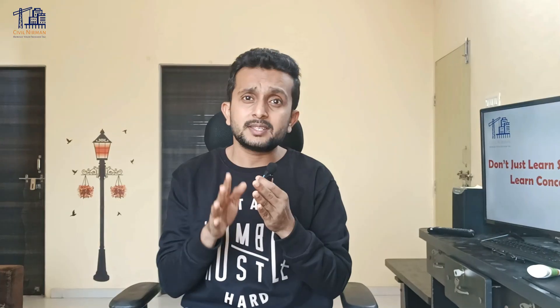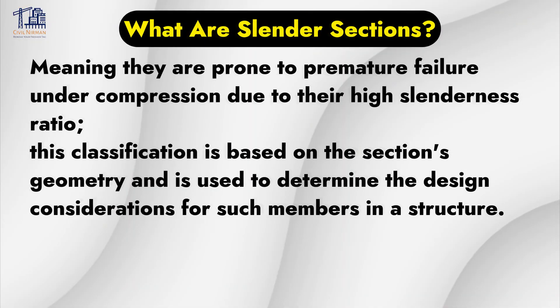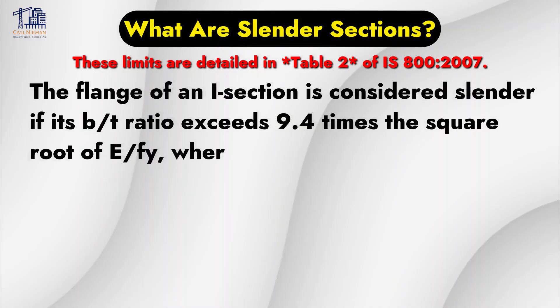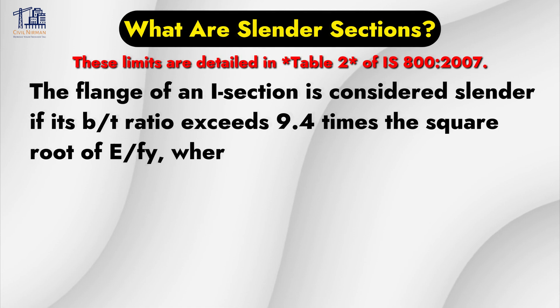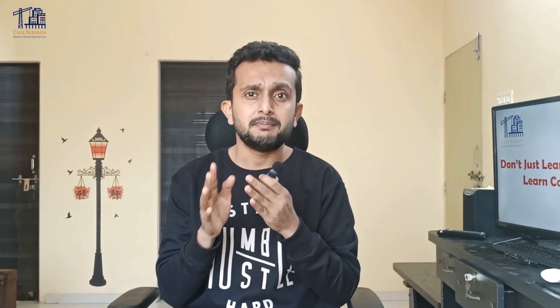This classification is based on the section's geometry and is used to determine design considerations for such members in a steel structure. These limits are detailed in Table 2 of IS-800-2007. The flange of an I-section is considered slender if its width-to-thickness ratio exceeds 9.4 times the square root of E divided by FY, where B, T, E, and FY are all parameters detailed in the table. Slender sections are prone to local buckling, which makes their behavior under loads more complex.